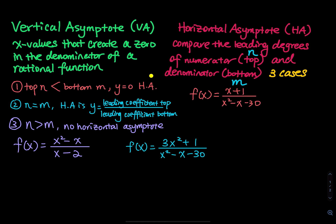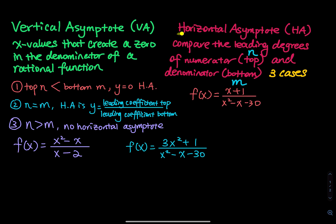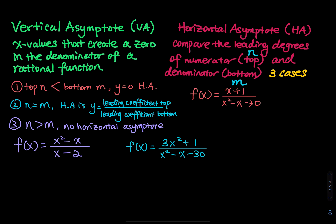In my notes, I use VA for vertical asymptote, and HA for horizontal asymptote. For horizontal asymptote, you compare the leading degree of the numerator — the top — and the leading degree of the denominator — the bottom.